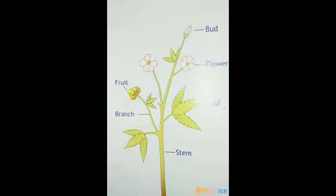Let's discuss what we have learnt today. A plant has two parts: root and shoot. The part of the plant that grows below the ground is called root, and the part that grows above the ground is called shoot. The shoot is made up of stem, branches, leaves, buds, flowers, and fruit. The root has two main functions: first, it takes in water from the soil; second, it fixes the plant firmly to the soil.